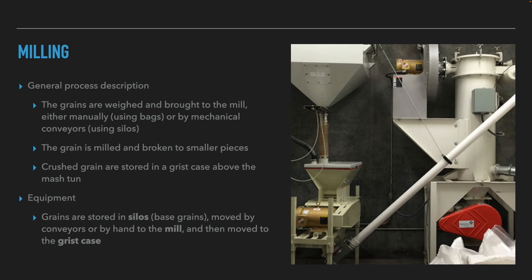The grains are weighed to the required amounts and brought to the mill, either manually by grain bags or automatically by conveyors. Afterwards, the grains are milled and broken into smaller pieces, then transferred into the grist case, which is located above the mash tun. The needed equipment is a place to store the grains — silos or a grain bag storage room — conveyors or hands to move the grist, and of course a grist case.